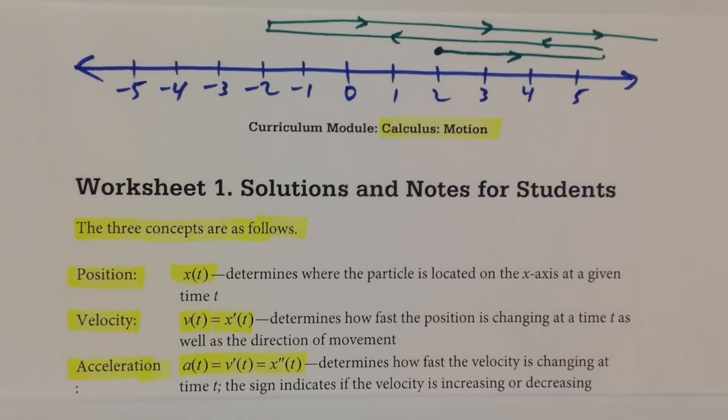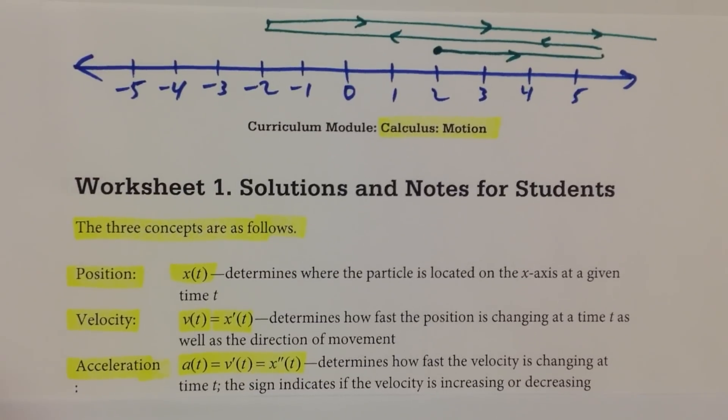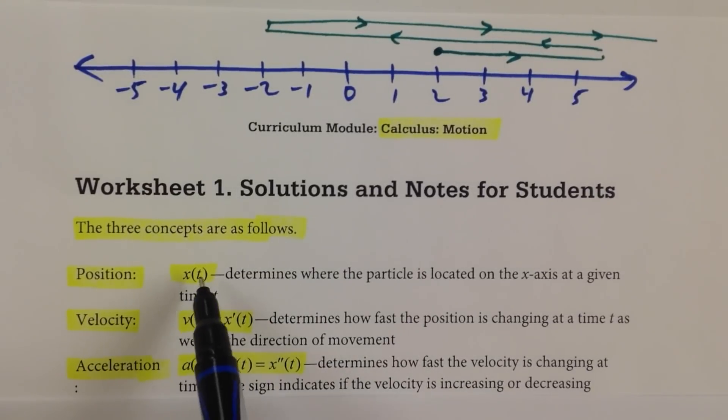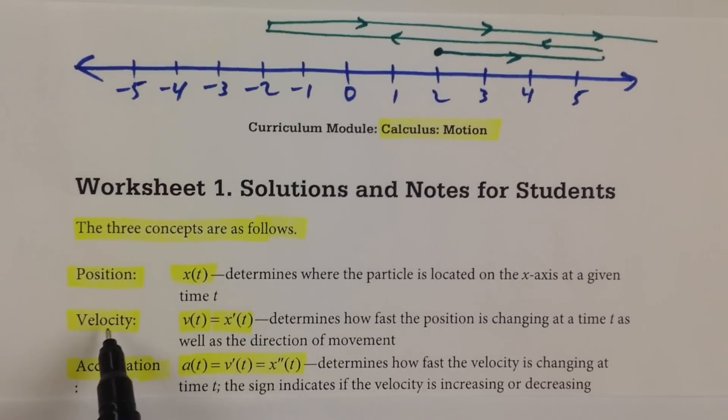So x of t is the position, and the rate at which the position changes, now that calculus concept of derivatives that we've been studying, now we get to actually put it into practice. So the rate of change of the position, dx/dt, would be the velocity, and the velocity determines how fast the position is changing, as well as the direction. So we'll talk about that in a minute.